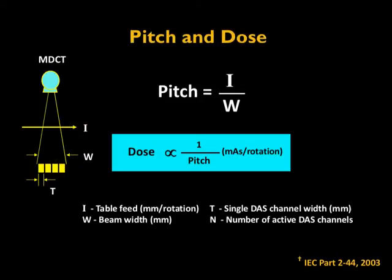We also perform many scans in helical mode. When you do helical mode, the concept of pitch arises. Pitch is defined as the ratio of table travel divided by the X-ray beam width. For example, if the table travels at 40 mm per gantry rotation and the beam width is also 40 mm, the pitch is 1 — meaning no anatomical gap is left. If the table travels faster with the same beam width, there can be an anatomical gap, translating to a pitch greater than 1. This is important because radiation dose is inversely proportional to the pitch value — keeping all other factors the same, if we change the pitch, the radiation dose changes accordingly.